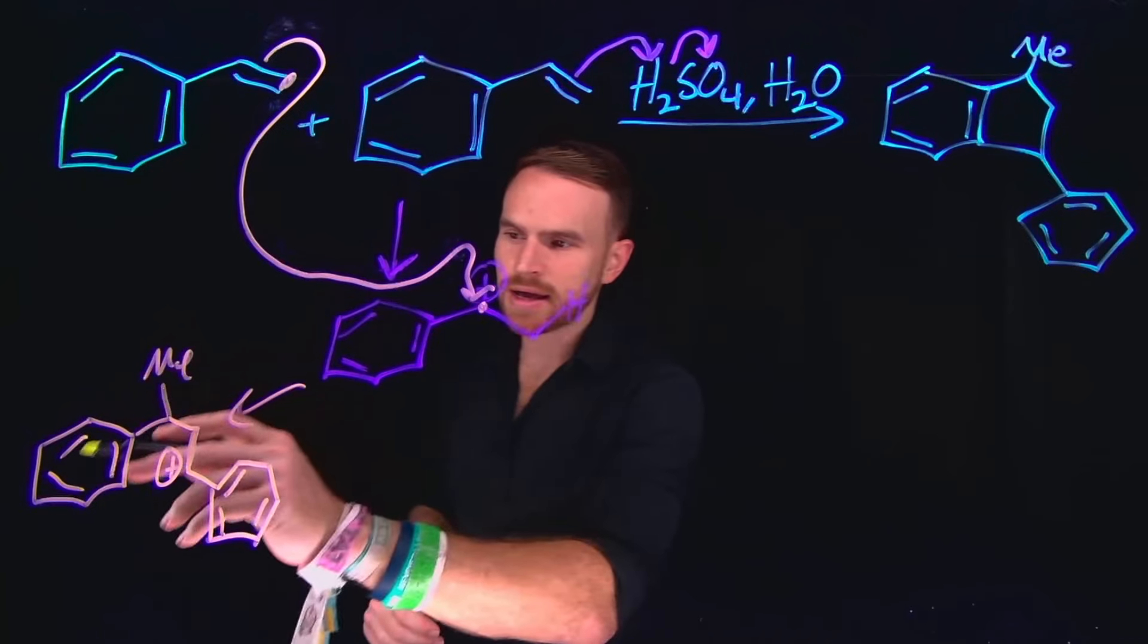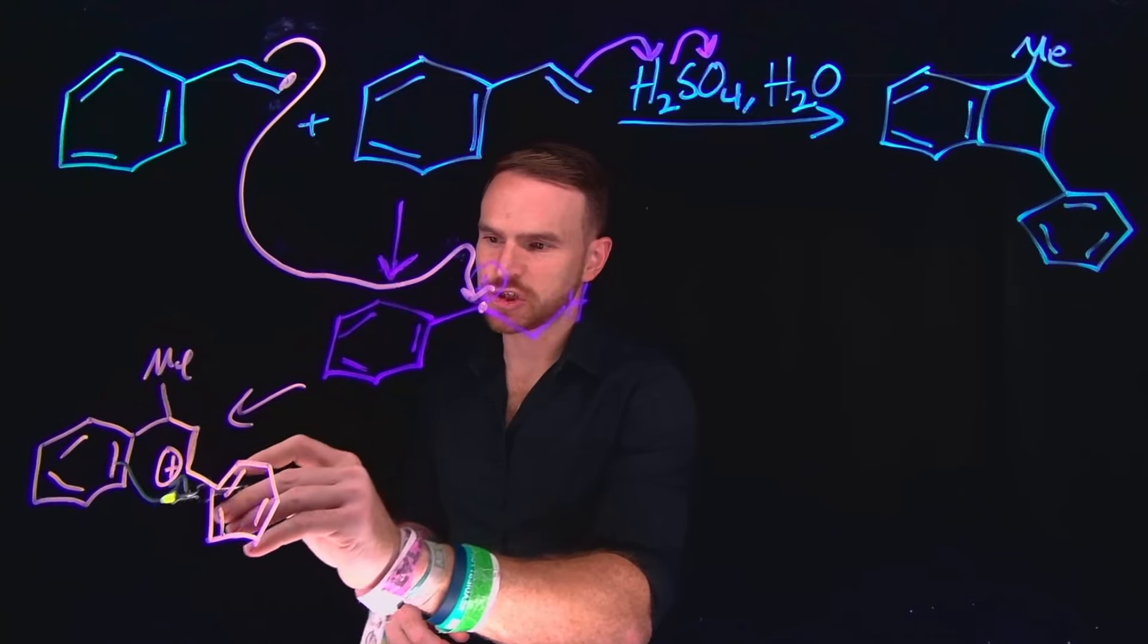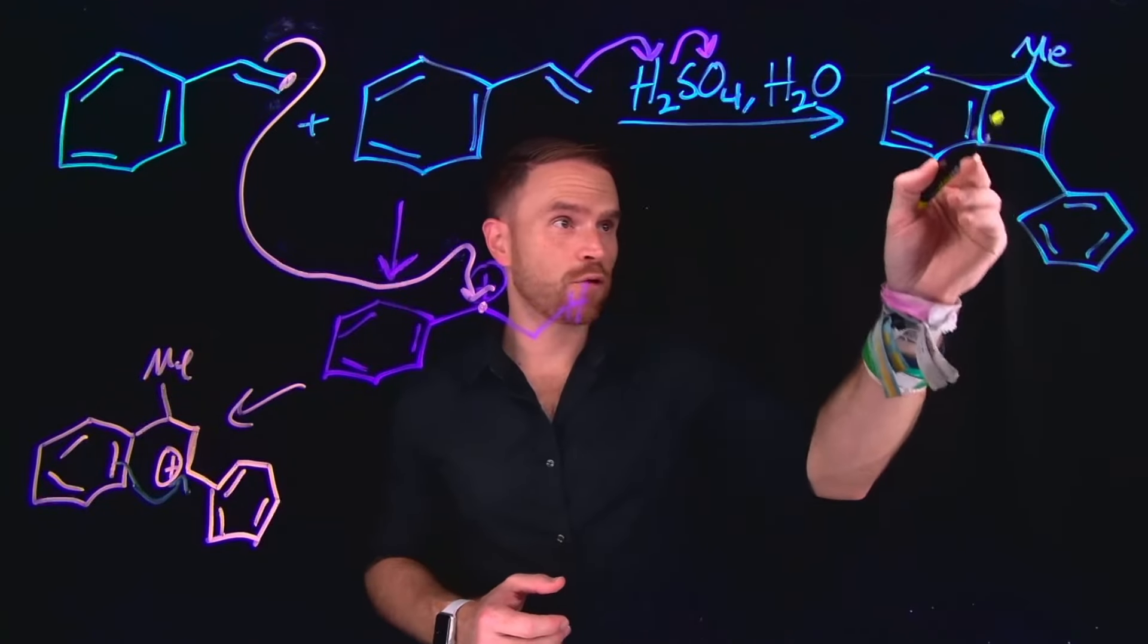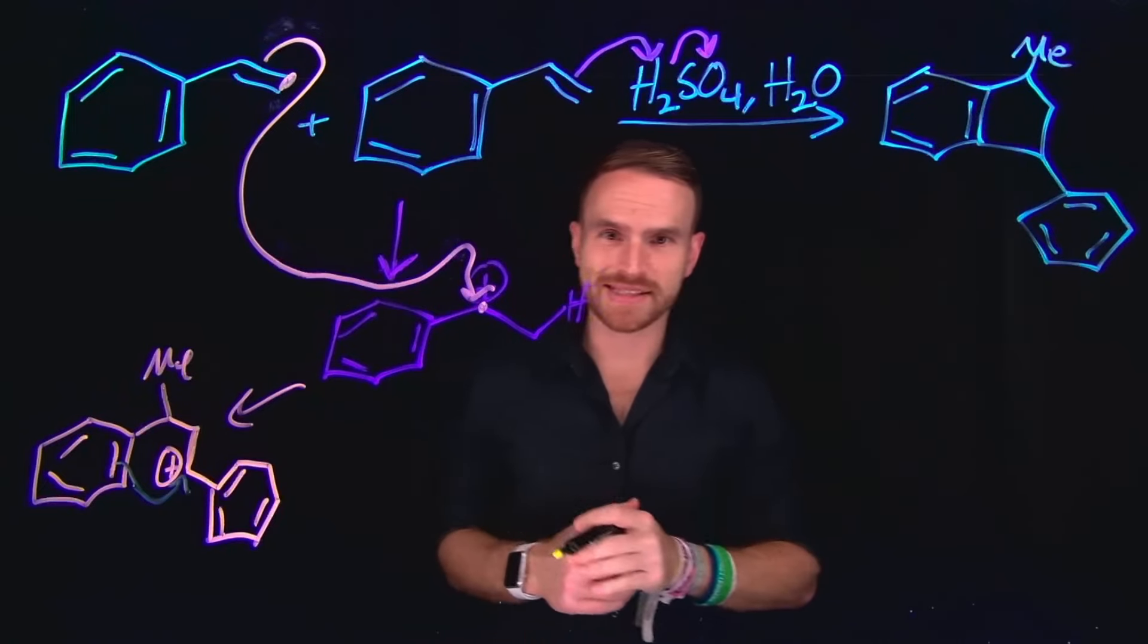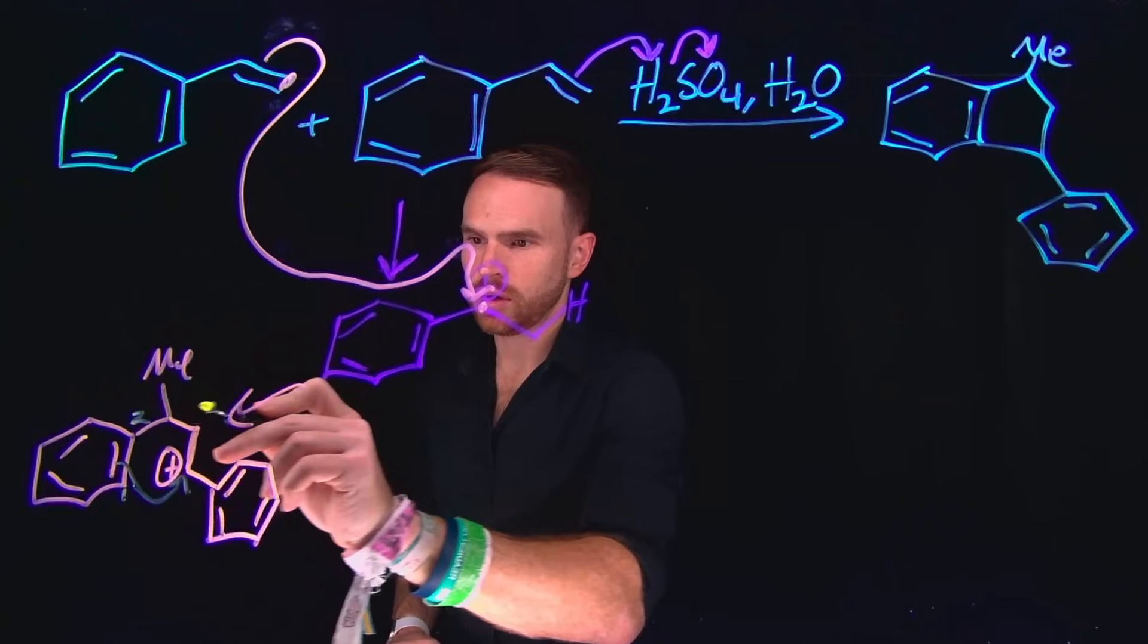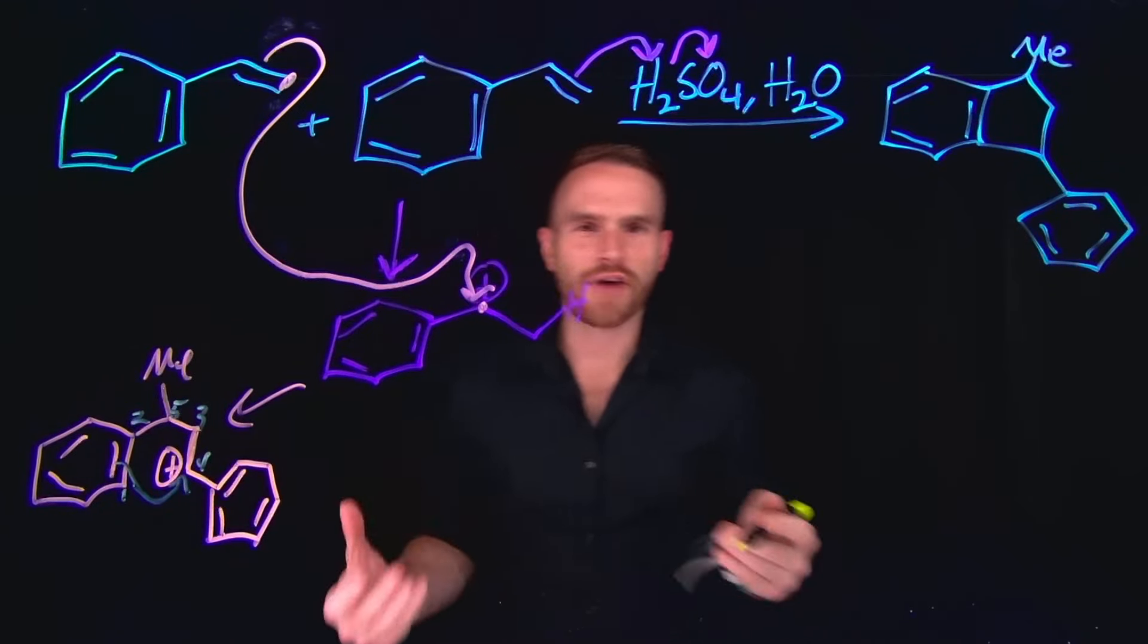From here, the pi electrons in this benzene ring will actually come and attack that carbocation position. And this is the step that forms our five-membered ring that is conjoined to the benzene ring. Because notice, this is one, two, three, four, five carbons giving us our five-membered ring.